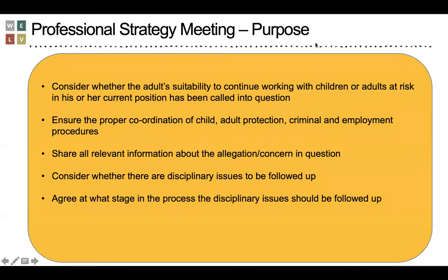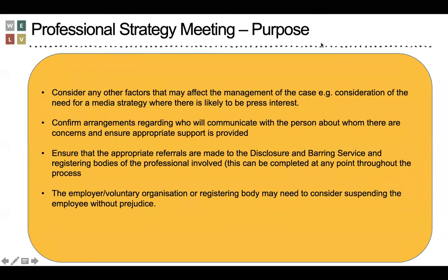The strategy meeting also considers whether the adult's suitability to continue working with children or adults at risk in their current position has been called into question, ensures proper coordination of child and adult protection, criminal and employment procedures, whether any disciplinary issues are to be followed up and at what stage, and any other factors that may affect the management of the case. It will confirm arrangements for communicating with the person about whom there are concerns, ensure appropriate support is provided to them, ensure appropriate referrals are made to the Disclosure and Barring Service and registering bodies, and consider whether the employer or voluntary organisation should suspend the employee without prejudice.